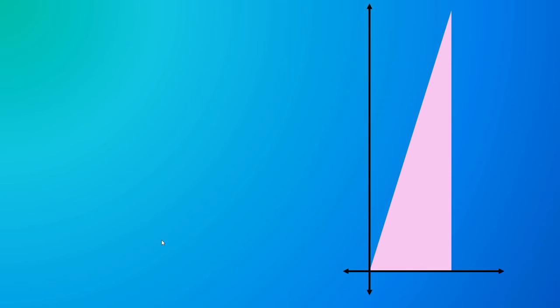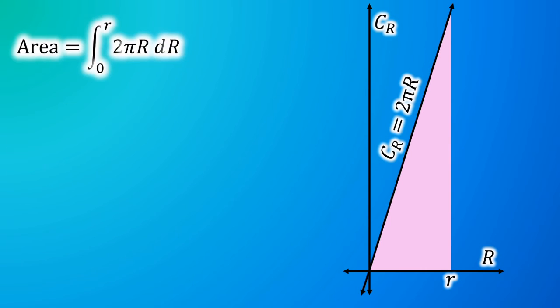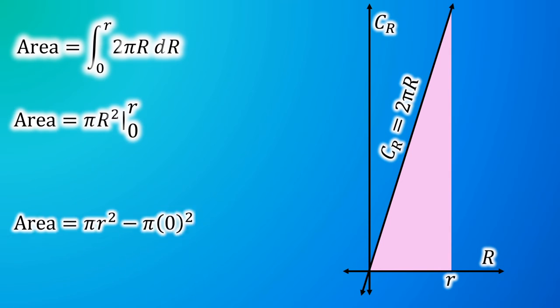Here is the triangle again, except now it has an infinite amount of parts. Here are the axes. Here is capital R, and here is lowercase r as one of the values for capital R. Here is the circumference of one of the inner or outer circles, which is 2π times the radius of that circle. So the area of this triangle would be the integral from 0 to r of 2π·R·dR. Then integrating, substituting, and simplifying gives us the area of the circle as π·r².